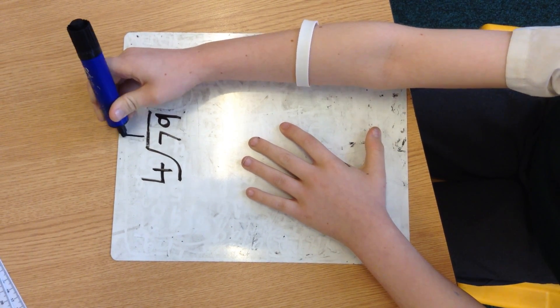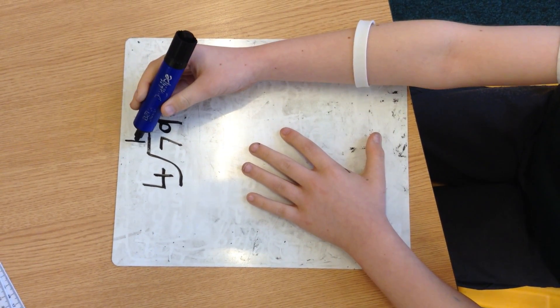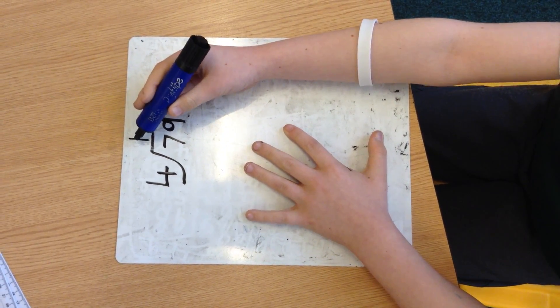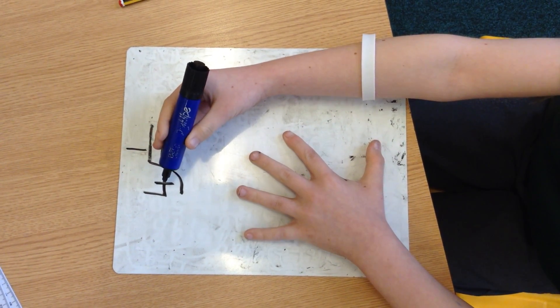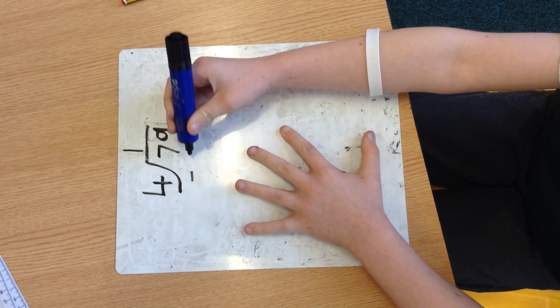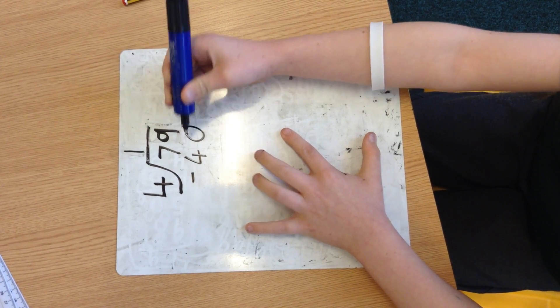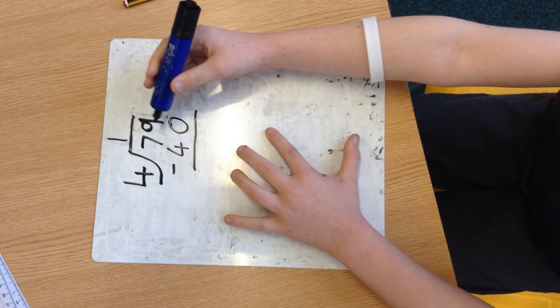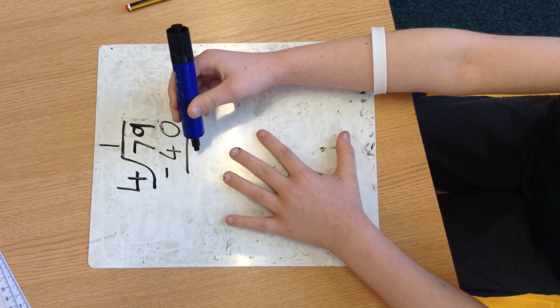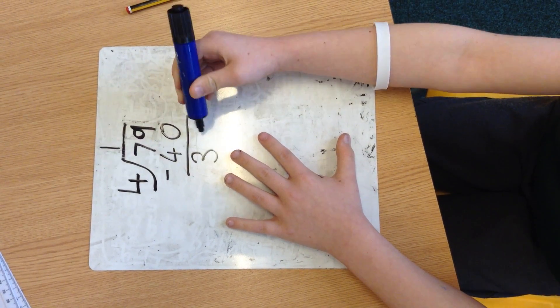Which would be 1 here. And then you would do 10 times 4, which is 40, so you would take away 40, which would equal 39.